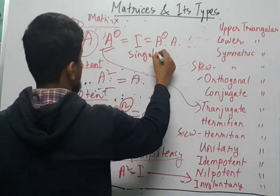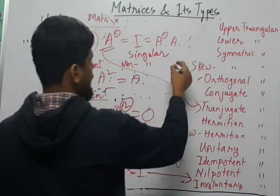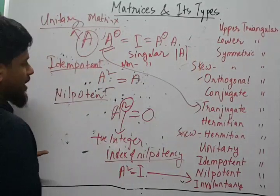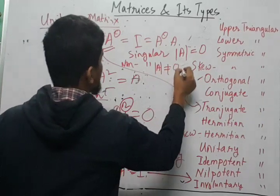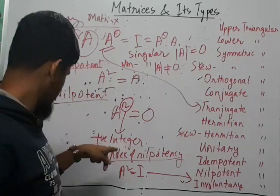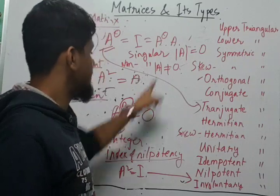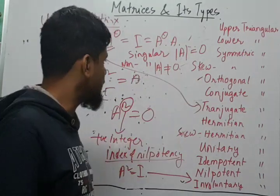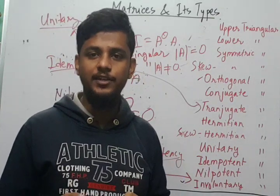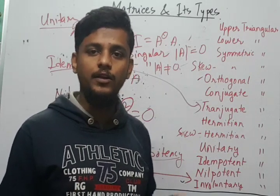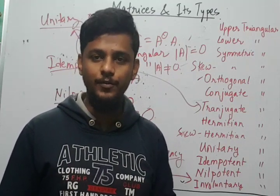Finally, a singular matrix is one where the determinant of matrix A equals zero, while a non-singular matrix is one where the determinant of matrix A is not equal to zero. These are the important types of matrices you should understand from an exam point of view. If you have any doubts about matrices explained here or others, please contact us in the comments below. Thank you very much.